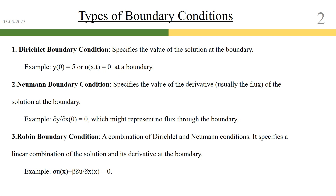In a Neumann boundary condition, we actually define flux — that means the derivatives. The derivative has a certain constant value or zero. For example, dy/dx at x = 0 equals zero. So we are defining the flux, that is dy/dx or the gradient, at a particular location of the solution space. Wherever we define a gradient on the solution space, those are called Neumann boundary conditions.